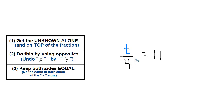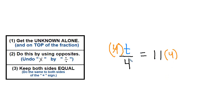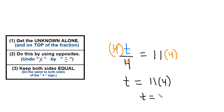Let's try another one. I have t over 4 equals 11. T is not alone because the 4 is there too. I have to remove the 4. Right now I'm dividing by 4; the opposite of divide by 4 is multiply by 4. So I multiply by 4 — these will reduce. To keep the other side equal, I have to multiply that side by 4 as well. The 4s reduce, and we end up with t equals 11 times 4, which means t equals 44.